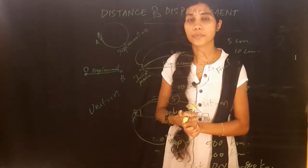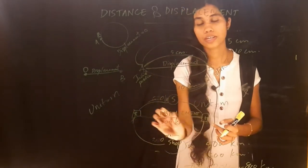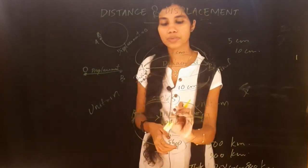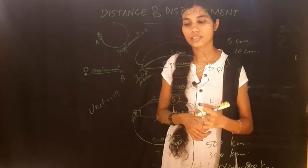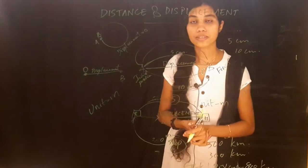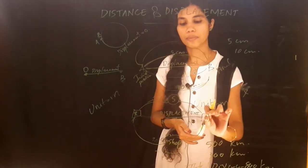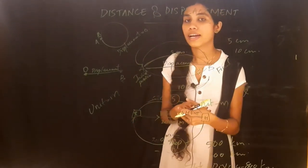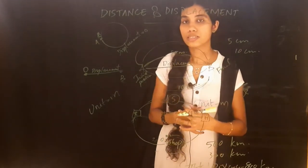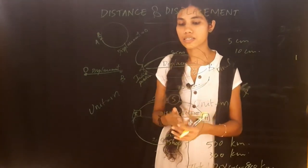We are talking about 200 km north. Distance tells us how far we traveled, but displacement tells us the direction too. Displacement is the magnitude of the net change in position. We are going to discuss physical quantities — vector quantities and scalar quantities. We are going to have distance and displacement.